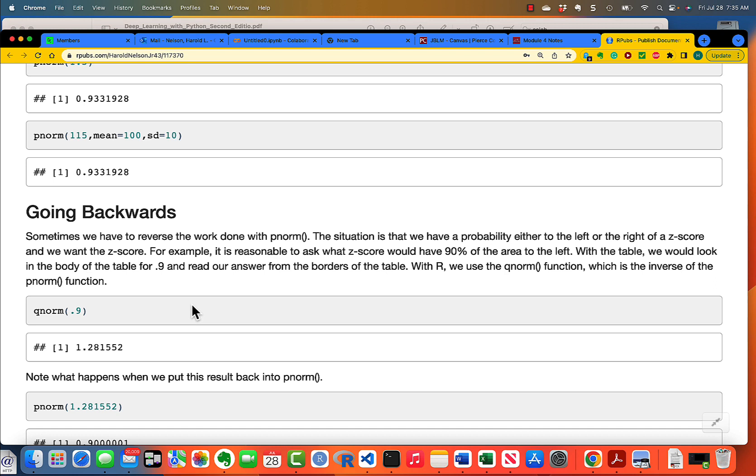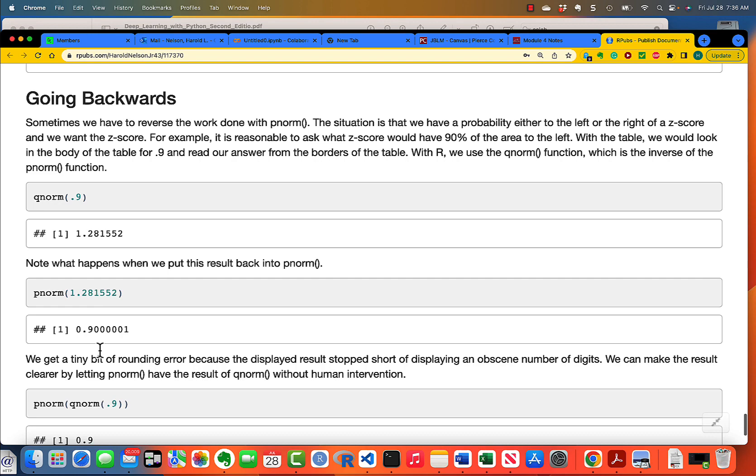Going backwards, sometimes you're in the opposite situation. That is, you know that the probability to the left of you is 0.9, and you ask, well, what is the z-score? If I have a p-norm of 0.9, where am I? And the answer is you are at, with the standard normal, at a value of 1.28.